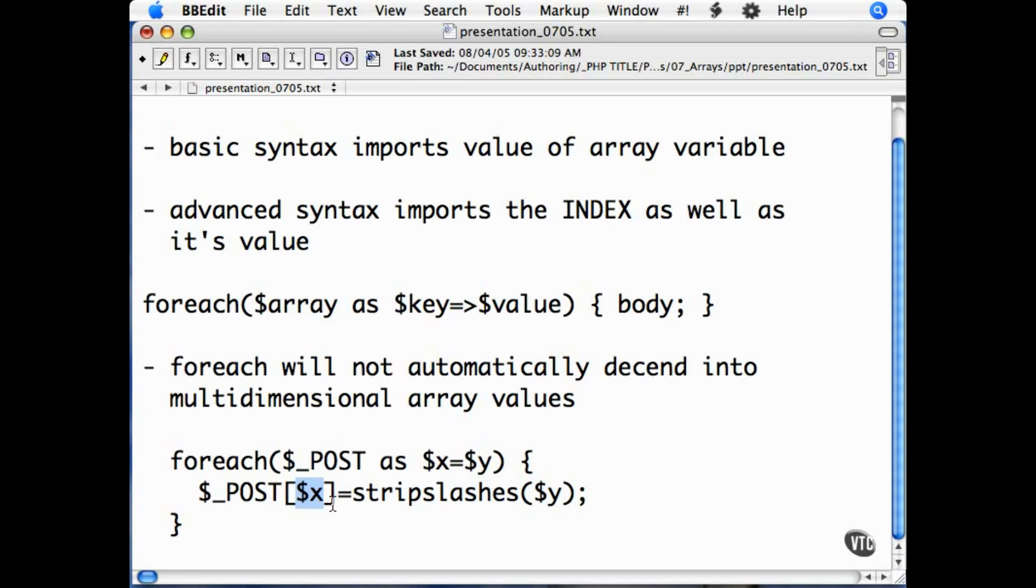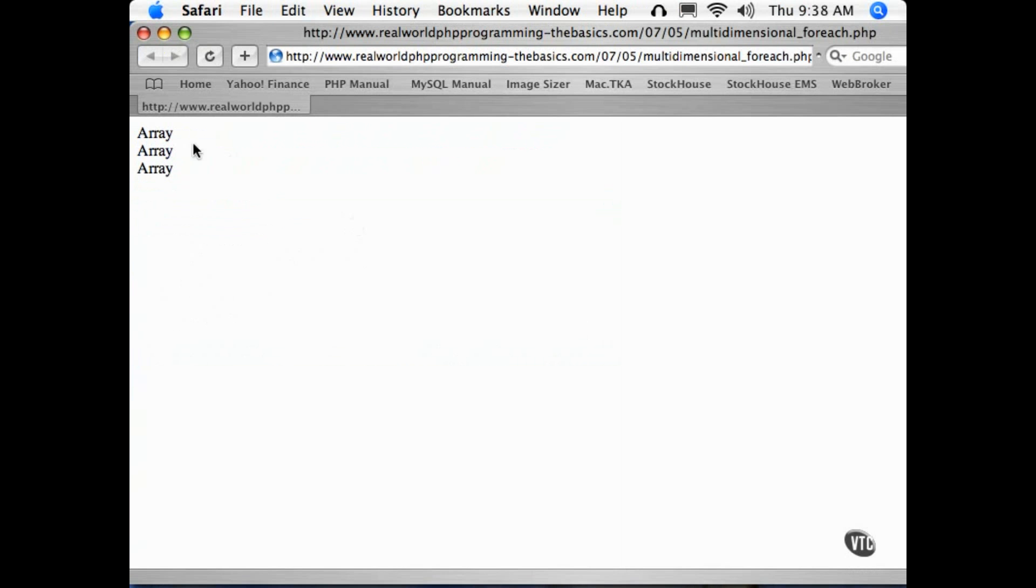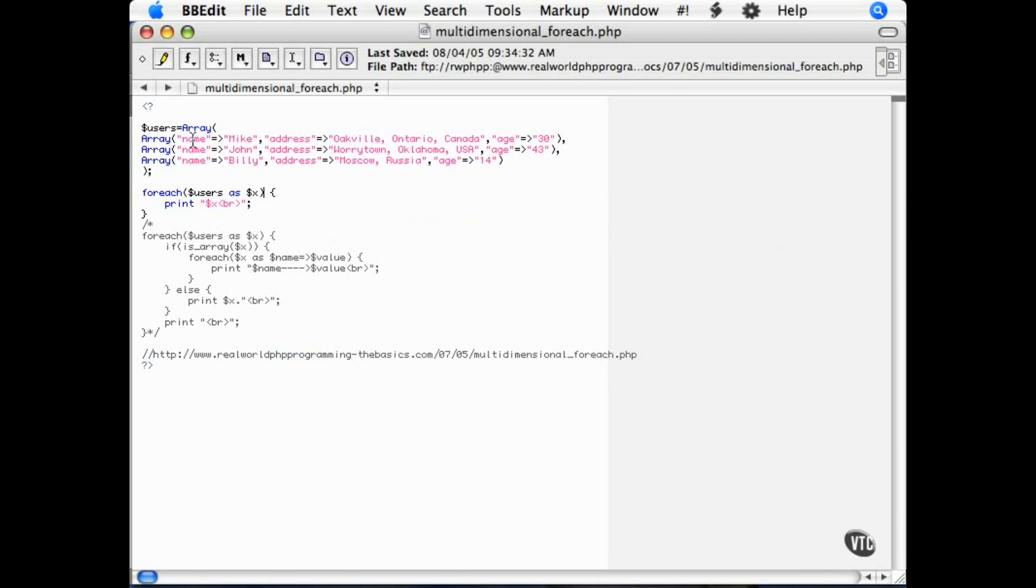One other thing that you need to know for each loop is that it will not descend automatically into a multi-dimensional array, if you have more than one dimension to an array. Here we have a multi-dimensional array. Now, a foreach loop will report each of these values of the elements as array. We can prove that by looping through it and printing out the value. You can see we have array, array, array. Three array members, and they're all arrays. We're not getting the actual values.